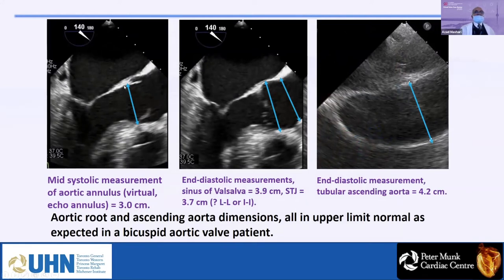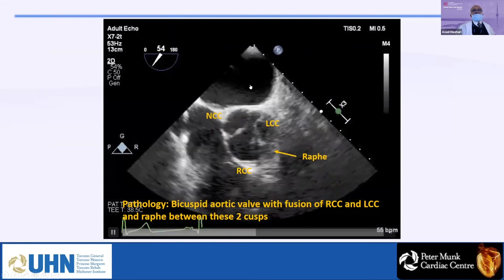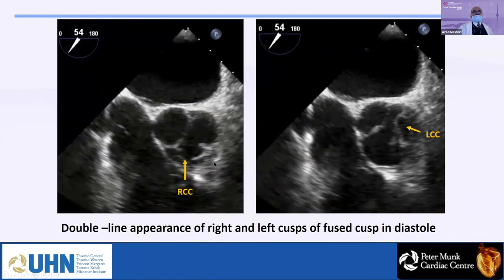Some measurements: the annulus is 30 mm. Bicuspid aortic valve annulus is never truly normal — it's at the upper limit of normal. The sinus of Valsalva is 3.9, still in the normal range. The tubular aorta is 4.2 cm — this type of dilatation is seen in all bicuspid aortic valves. The double shadow echo sign of prolapse applies to both tri-leaflet and bi-leaflet valves.